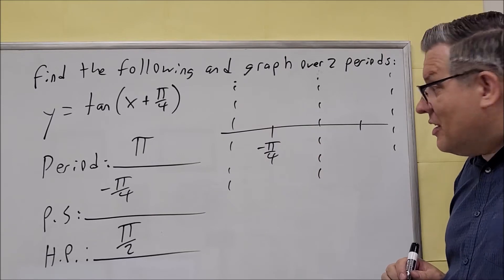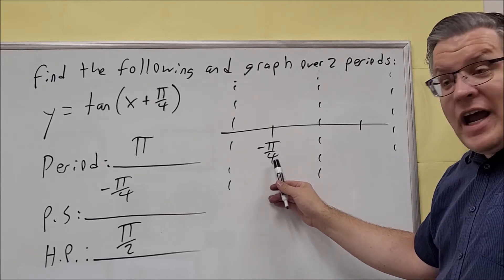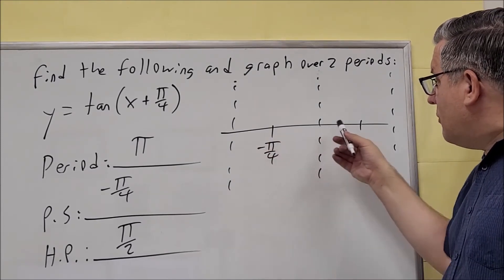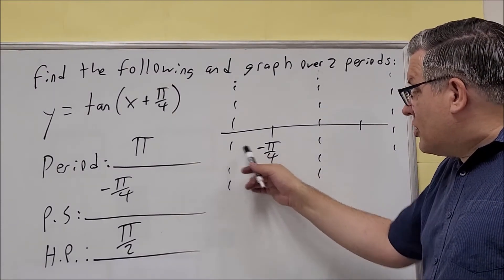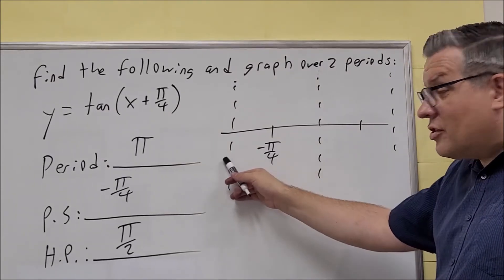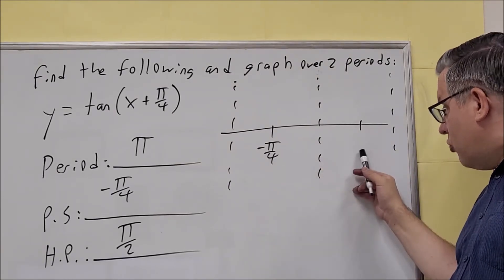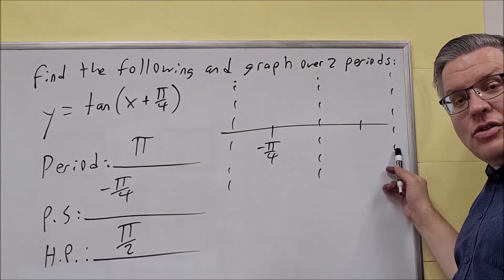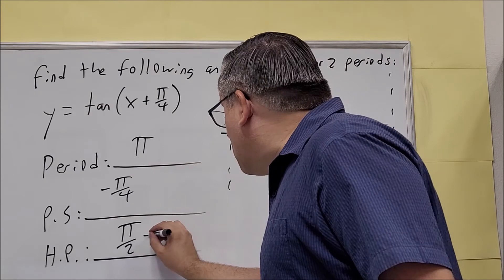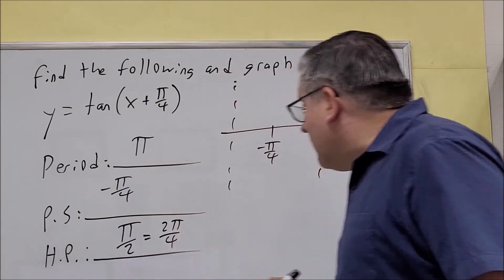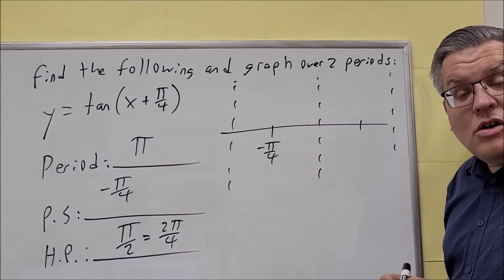Negative pi over 4 is our phase shift. The half point is how far it is between each of the segments you see here. So to find the left asymptote, I'm going to take negative pi over 4 and subtract the half point. To find the ones to the right, I'm going to add the half point once, twice, and three times. I'll convert pi over 2 to 2 pi over 4 so I have the same denominator, making subtraction and addition easier.